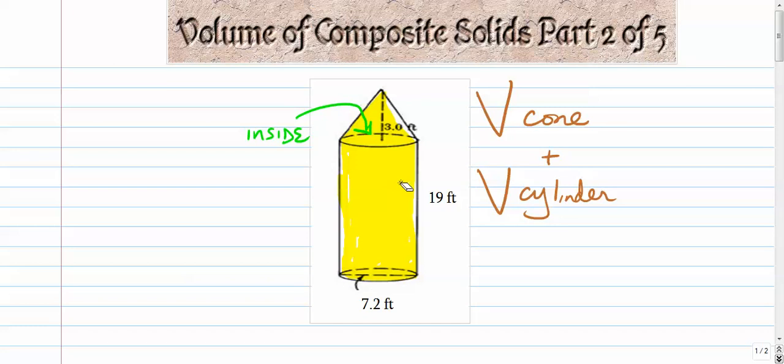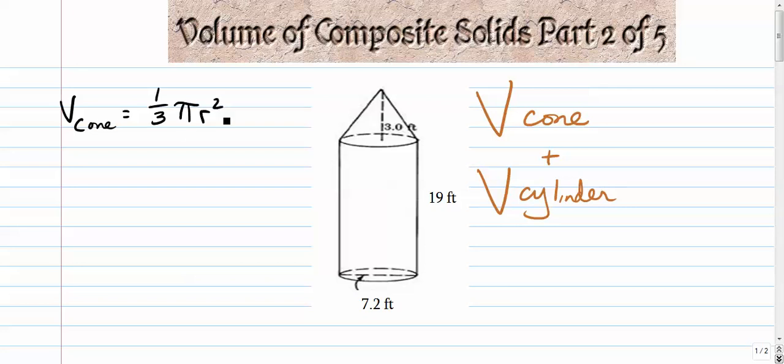So here we go. Let's start with the volume of the cone. Volume of the cone is, if I remember correctly, 1/3 pi r squared times h. And let's see, we have h is 3, and the r, well the r of the cone is the radius of the cone. Well, that's the same as the radius of the cylinder. The diameter of the cylinder is 7.2, so the radius must be half of that, or 3.6.